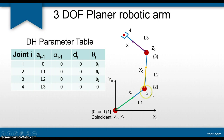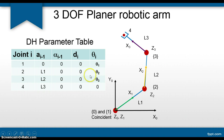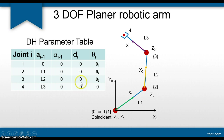For joint number two, the link length is l1, which is the perpendicular distance between z1 and z2. Since z1 and z2 are parallel, link twist alpha is zero. Joint number two is revolute so joint offset d is zero, and rotation is represented by theta2. For joint number three, the link length is l2 — the distance between z2 and z3 — link twist is zero, joint offset d is zero, and the rotation angle is theta3.